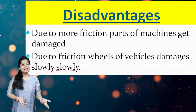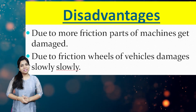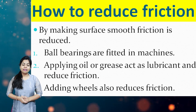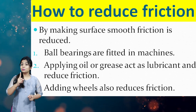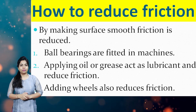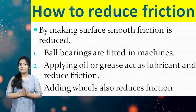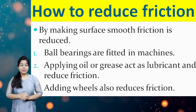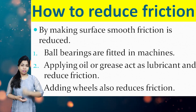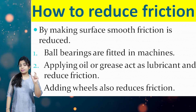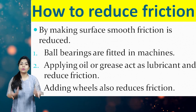When problems are there, solutions are always there too. How to overcome these disadvantages? Rough surfaces apply more friction but smooth surfaces always reduce friction. So wherever we do not need more friction, we can make that surface smooth. In machines, ball bearings are fitted to reduce friction and help the machines work properly.